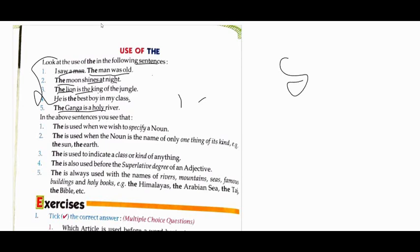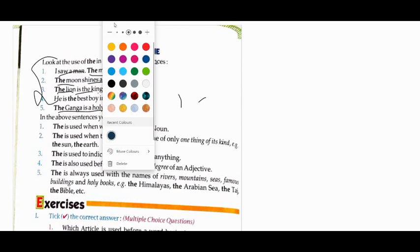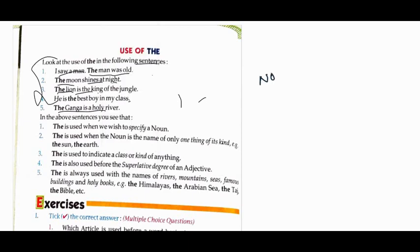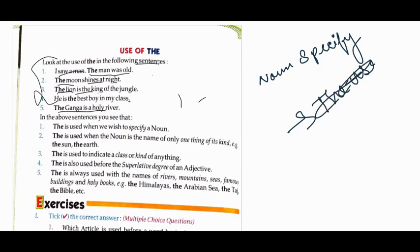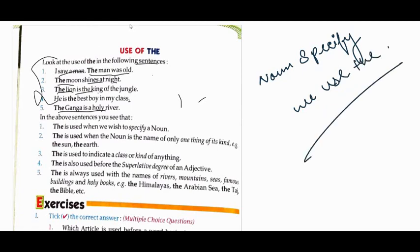Now we will tell them the use of 'the'. What is first? 'The' is used when we wish to specify a noun. We use 'the' to specify the noun. I saw a man - man is a noun. We have specified the noun.